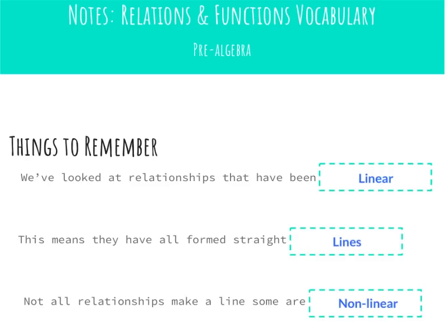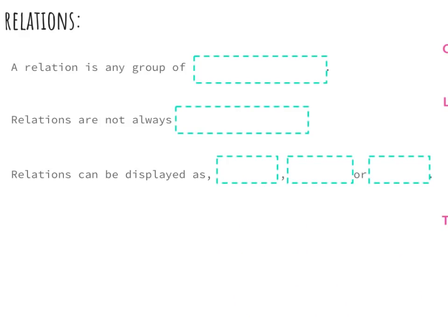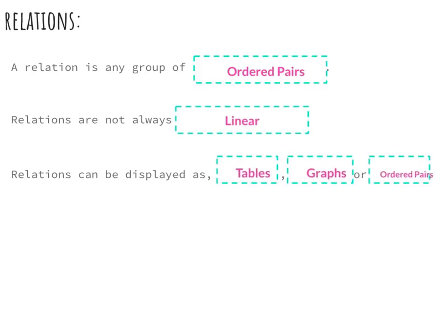Let's take a look at what relations mean. A relation is any group of ordered pairs. Relations are not always linear and they can be displayed in three ways: using tables, graphs, or ordered pairs. A good way to think of a relation is a relationship between x and y, or a set of ordered pairs.